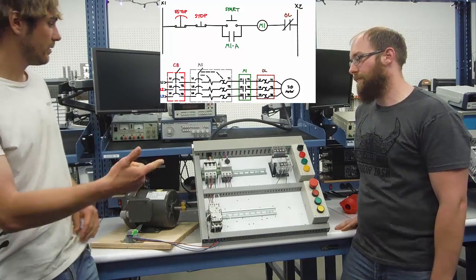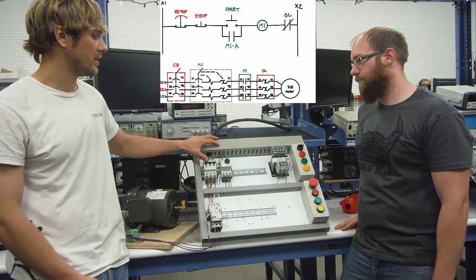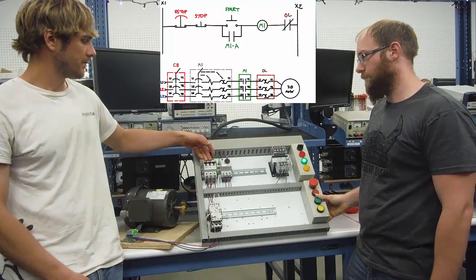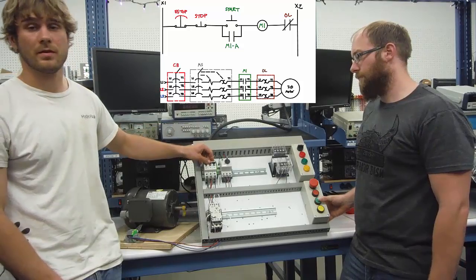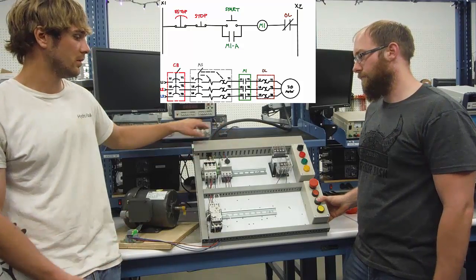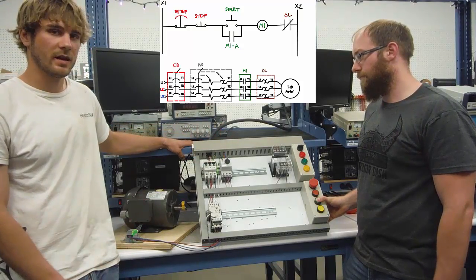So when the motor is turned on and there is a sudden loss of power, the motor will shut off. But it won't turn back on when the power is restored until the green button is hit again.